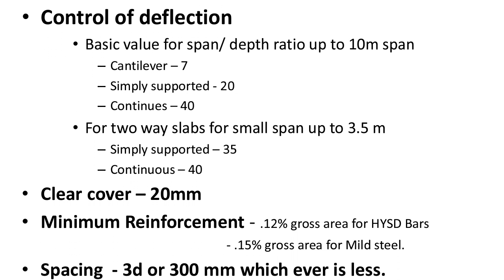While designing slabs, we must consider important points from Indian standards. The first is control of deflection. To control deflection, we use the span-to-depth ratio. For spans up to 10 meters: cantilever slab has a basic span-to-depth ratio of 7, simply supported has 20, and continuous has 40.